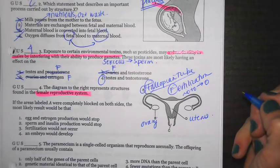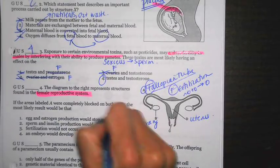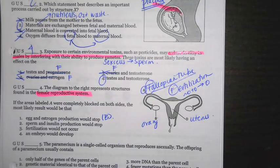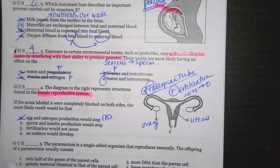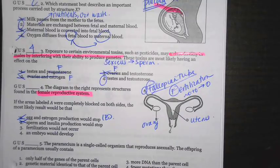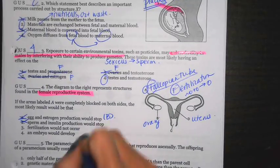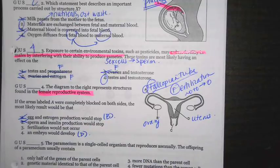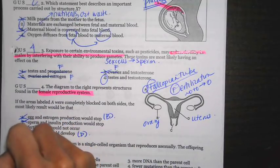So number one says egg and estrogen production would stop. No, the egg and estrogen are both produced inside of the ovary, which is B. So that's not it. Number two says sperm and insulin production would stop. Well, this is the female reproductive system. Remember, sperm occurs in the male reproductive system. And insulin is produced by the pancreas, which is not part of your reproductive system. So we can cross that one off. Three says fertilization would not occur. All right, that one looks good, but let's read the last one. An embryo would develop. Embryos develop inside of D, which is the uterus. So best answer choice there is going to be three.